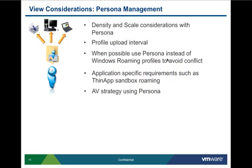When using Persona, make sure you understand the density and scale considerations. The CPU cycles required for Persona should be taken into account when designing your environment. Experiment with profile upload intervals and pick the right one that suits your environment. When possible, use Persona instead of Windows roaming profiles to avoid conflicts. Look into application-specific requirements such as ThinApp Sandbox and Roaming. Determine how adding Persona will affect your antivirus strategy — if using a hypervisor-based AV solution, you can either have AV scan the Persona folder during the VM scan or scan the Persona piece directly. Understand the resource requirements and pick the right option for your design.